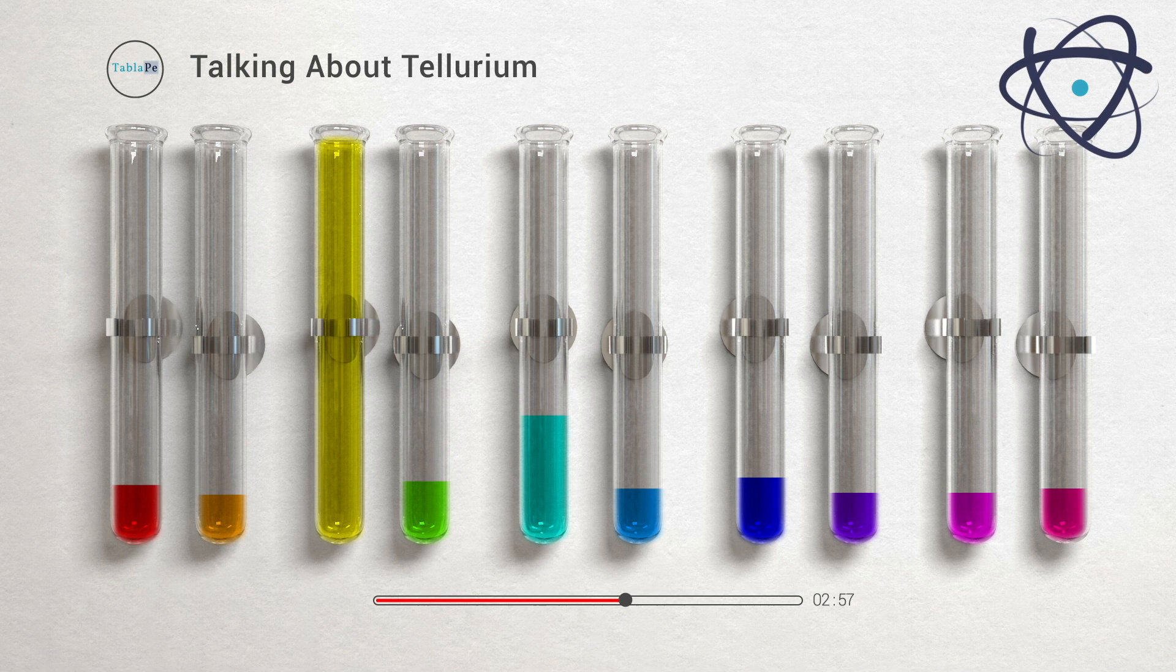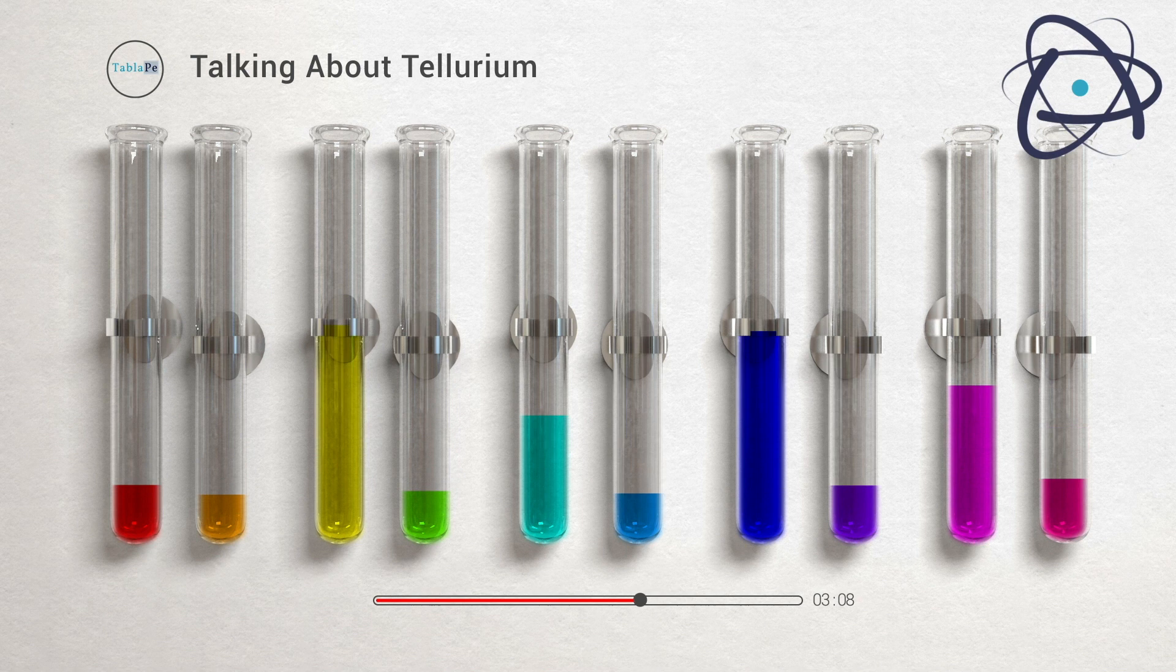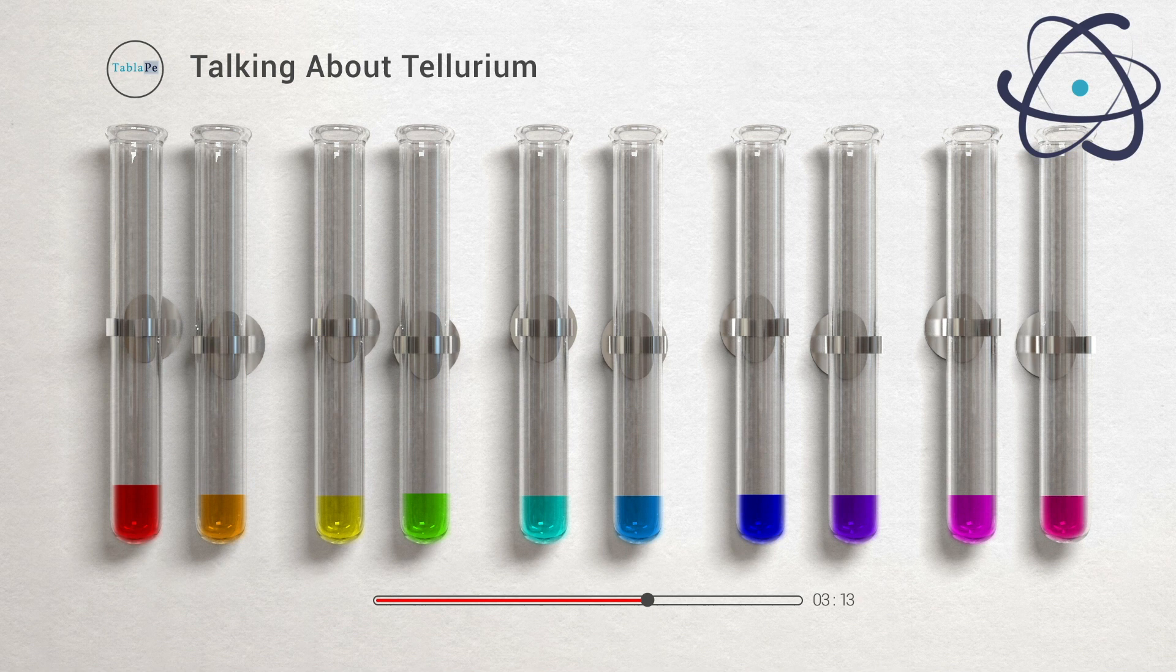Tellurium is a poor conductor of heat and a fair conductor of electricity. Unlike most metals, it does not dissolve easily in water or hydrochloric acid. Of the chalcogens, tellurium has the highest melting and boiling points at 449.51 degrees Celsius and 988 degrees Celsius respectively.